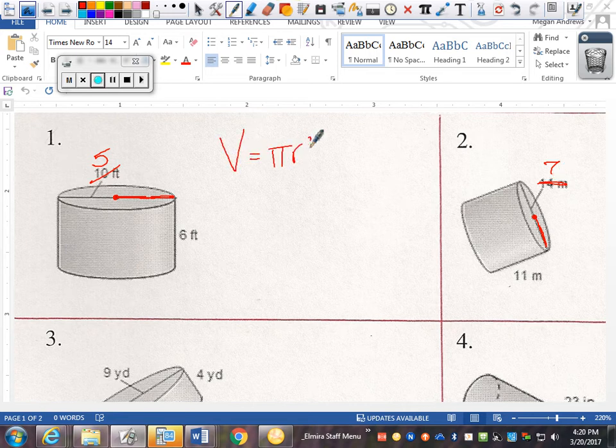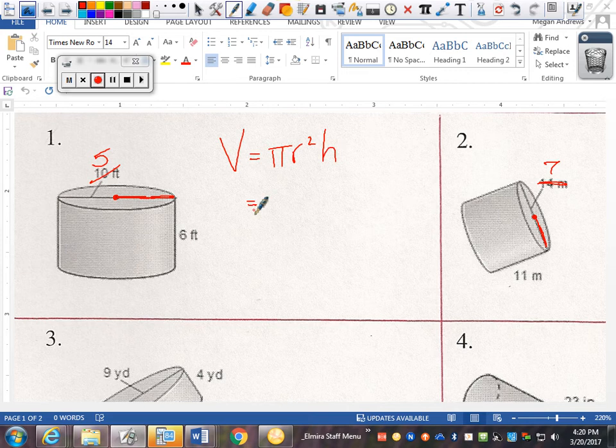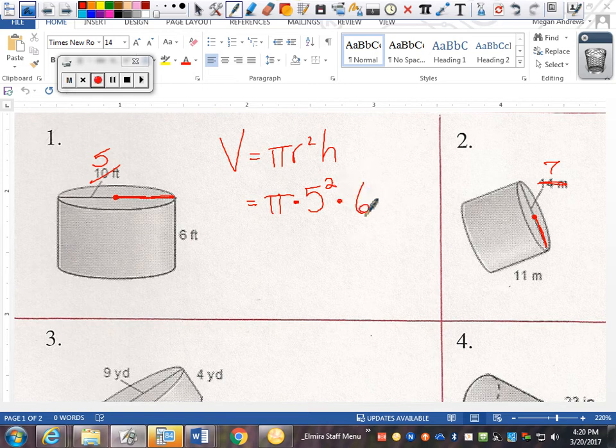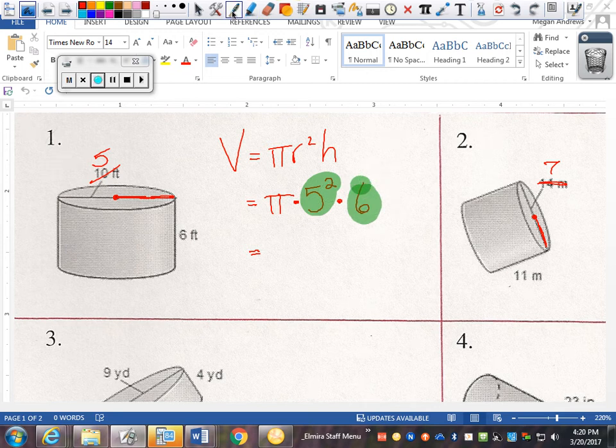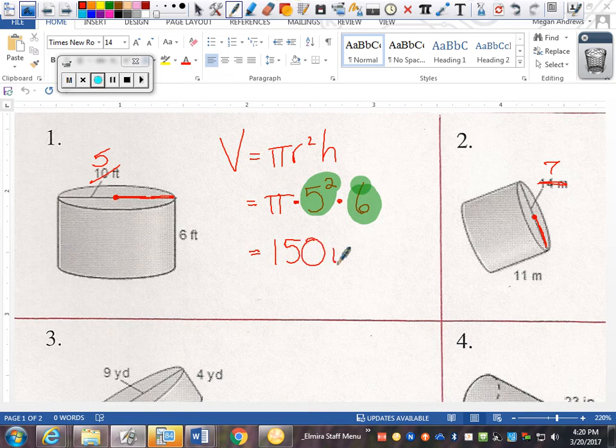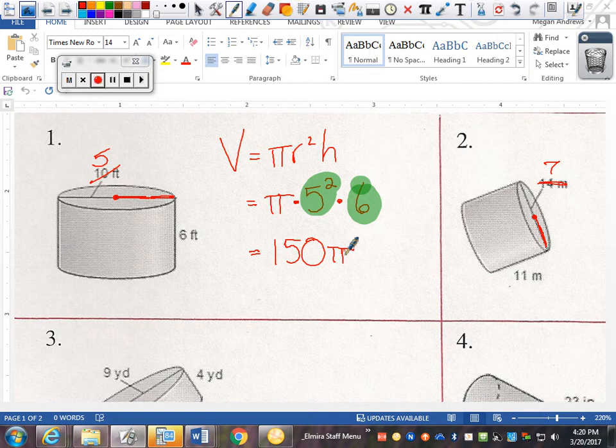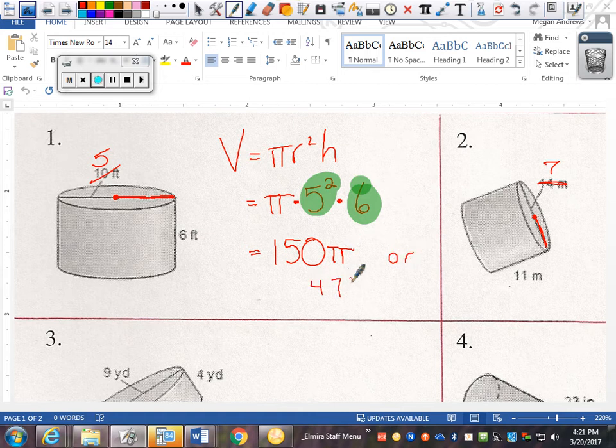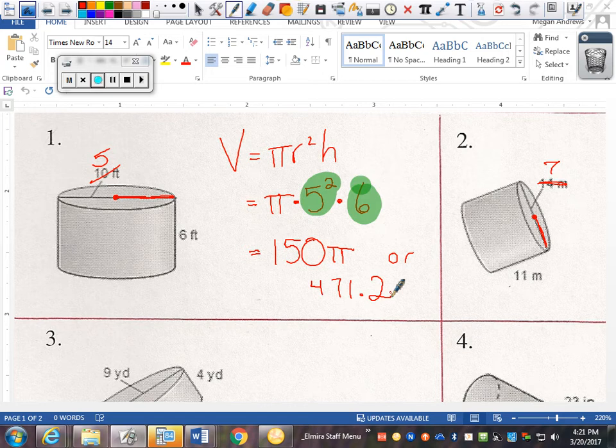Volume equals pi r squared h. So we're subbing in pi times r, which is 5, squared, and then 6 is the height. And if you're in my class, I'm making you write the answer both ways. First, we're doing in terms of pi, which means 5 squared times 6 is 150 pi. If you don't put the pi, it's wrong, so make sure you put it. And then 150 times pi is 471.2. So those are your cylinders.